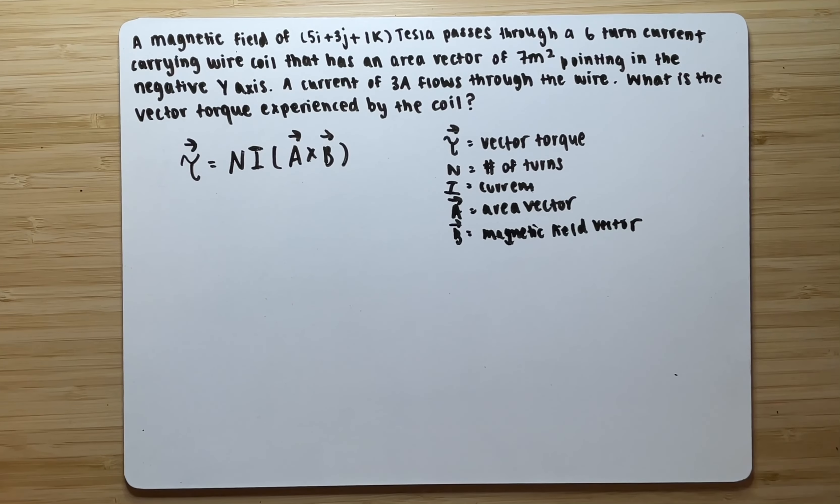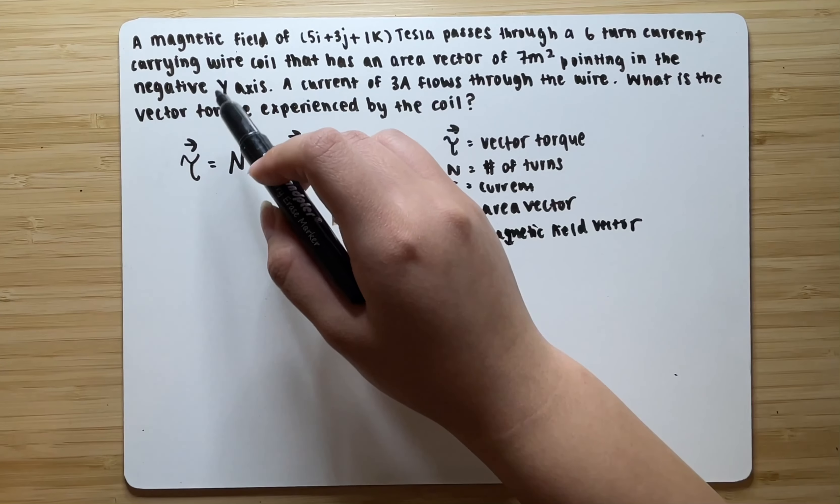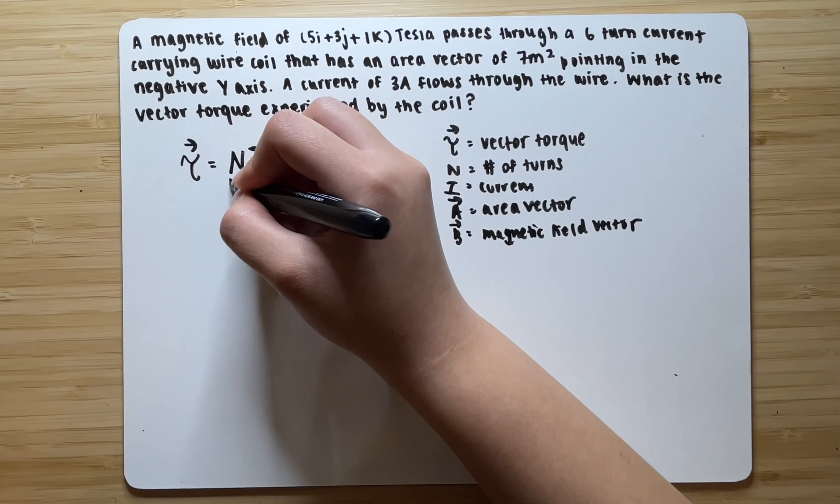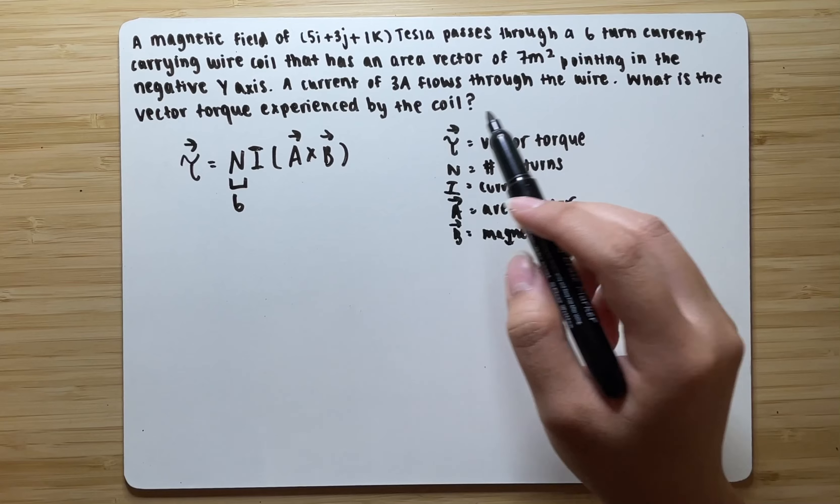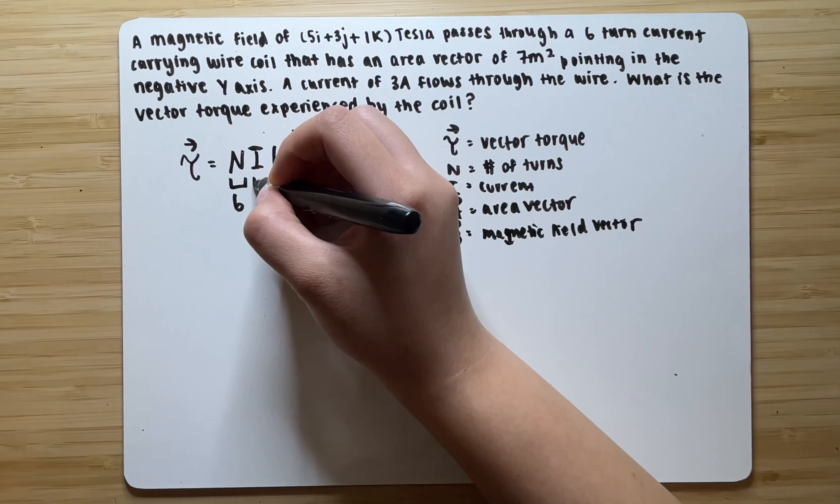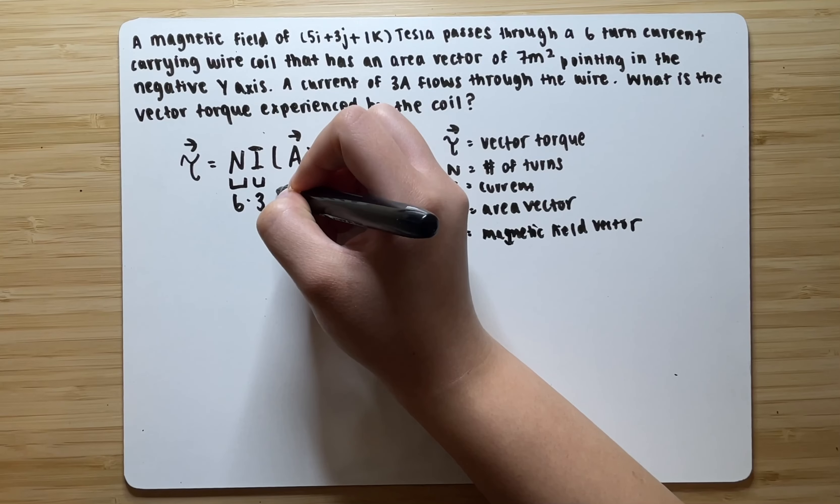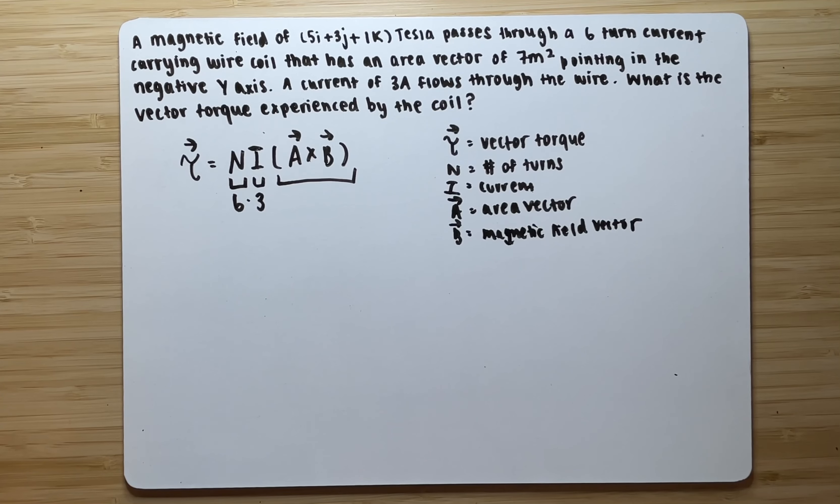Now, looking at the problem, we want to see what it gives us. It says here that it passes through a 6-turn current-carrying wire coil, so the 6 is going to be the number of turns. And it says a current of 3 amps flows through the wire, so our current is going to be 3. And we don't know what this is yet, so we're going to leave that blank because we need to find that out.